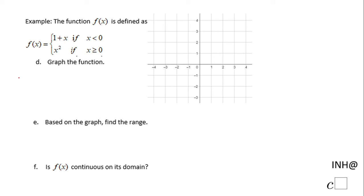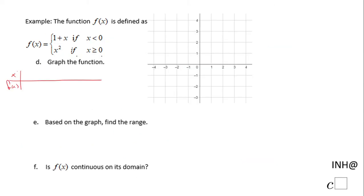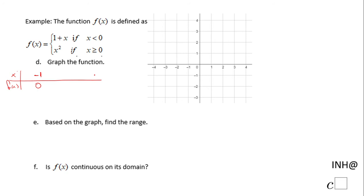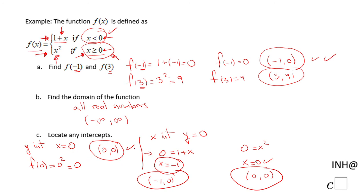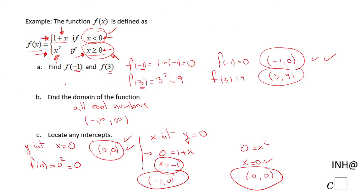On part d, we are asked to graph the function. I'll make a table using values from the previous parts. We have (−1, 0) and (3, 9) from parts a and b, and also (0, 0) from the intercepts.